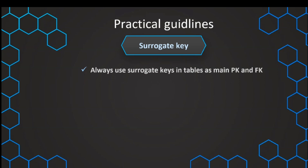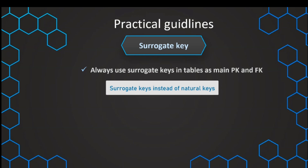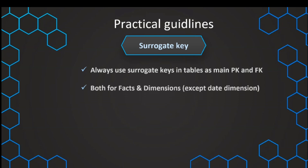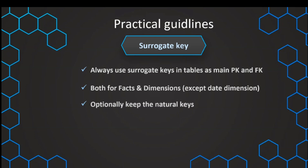We should always use those surrogate keys in our tables for our primary key and of course also for our foreign keys. In general, I would recommend using surrogate keys both for fact and dimension tables. One exception is the date dimension — we don't necessarily need to do that there because it is very predictable and we can just stick with our date key. But for all other dimensions, we should always use surrogate keys.